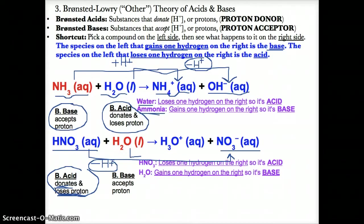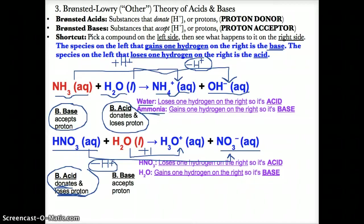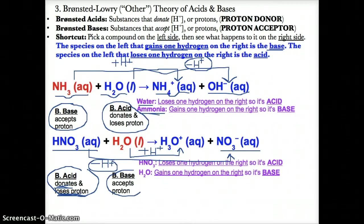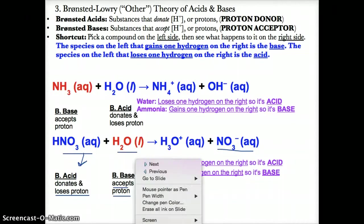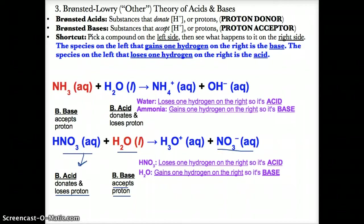On the other hand, H2O liquid becomes H3O+ (aq). Since it's going from H2O to H3O+, that suggests it's gaining one hydrogen ion — one more hydrogen on the right. Since H2O is the species on the left that gains one hydrogen on the right, H2O is the Bronsted base because it accepts the H+ or proton to go from H2O to H3O+.